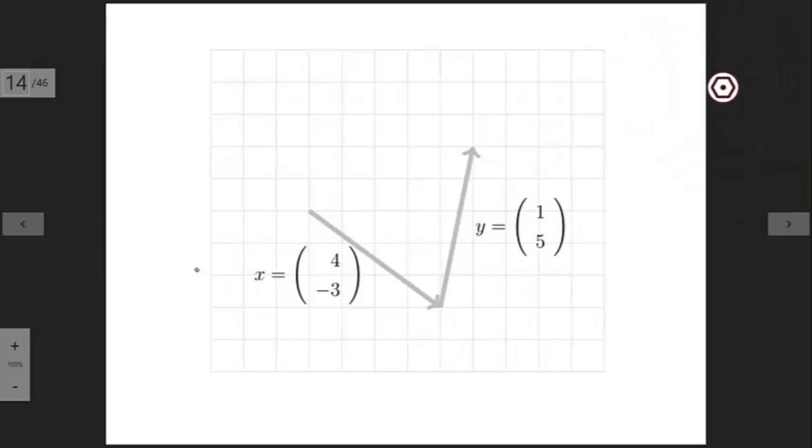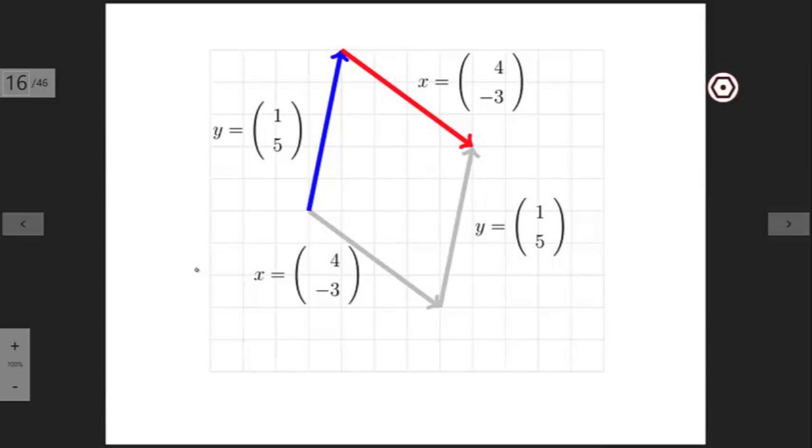Instead of doing x plus y, what we could do is add y to x. Let's see what happens if we do that. So now we start at the same point, we follow y first, then we lay x and y head to toe.